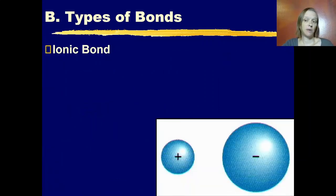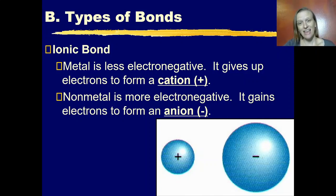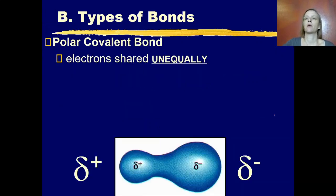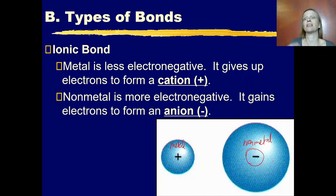Let's look at each of these three types of bond in more detail. With the ionic bond, the metal is less electronegative, so it gives up electrons to form a cation. The non-metal is more electronegative and gains electrons to form an anion. The electron clouds are completely separate — one atom has a positive charge and the other has a negative charge, and they are attracted to each other by an electrostatic attraction.